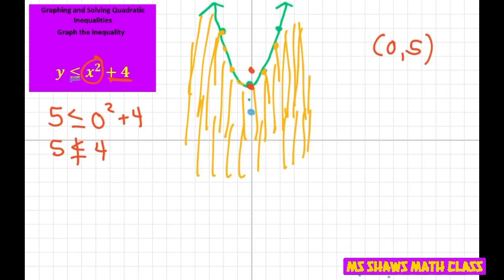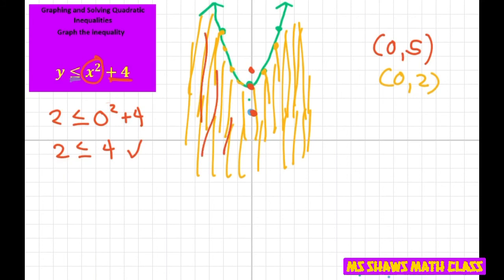Or you could pick another point. I like the 0 ones. Let's pick this point, which we're saying is the solution. And that point is 0, 2. So let's check it. We have 2. Is 2 less than or equal to 0 squared plus 4? Is 2 less than or equal to 4? Yes. So this point works. So that's another way to check it.